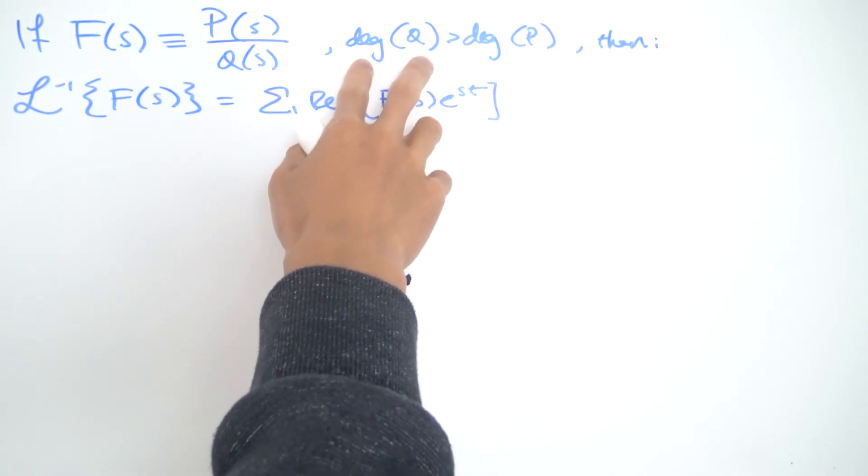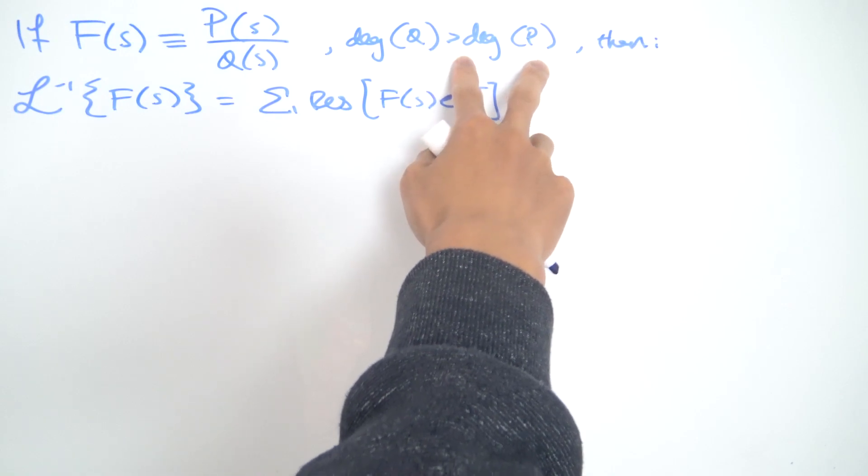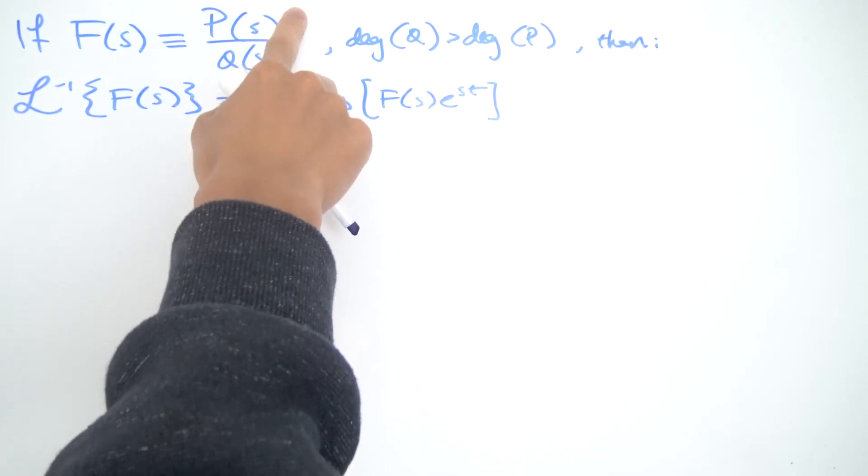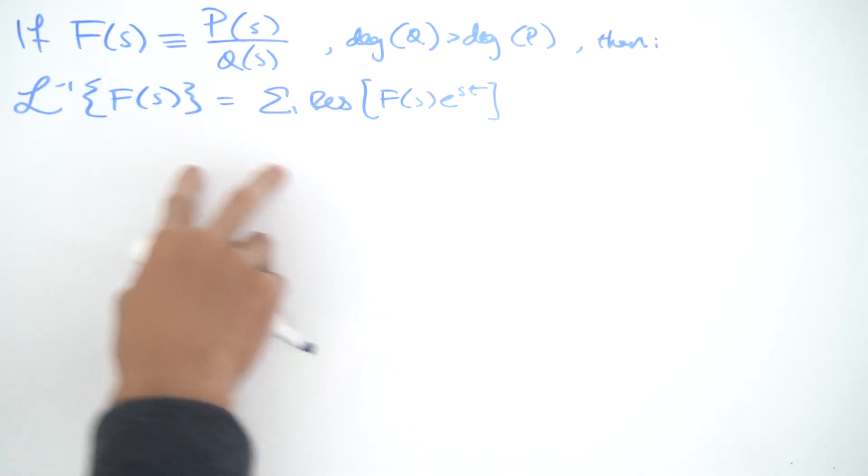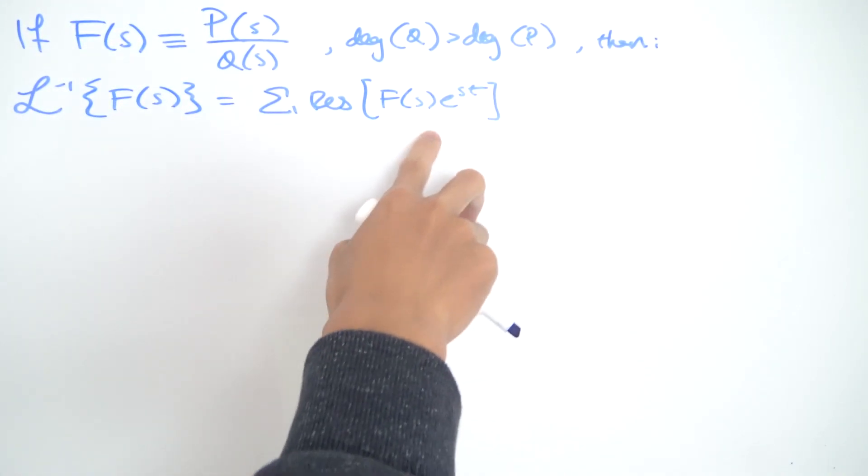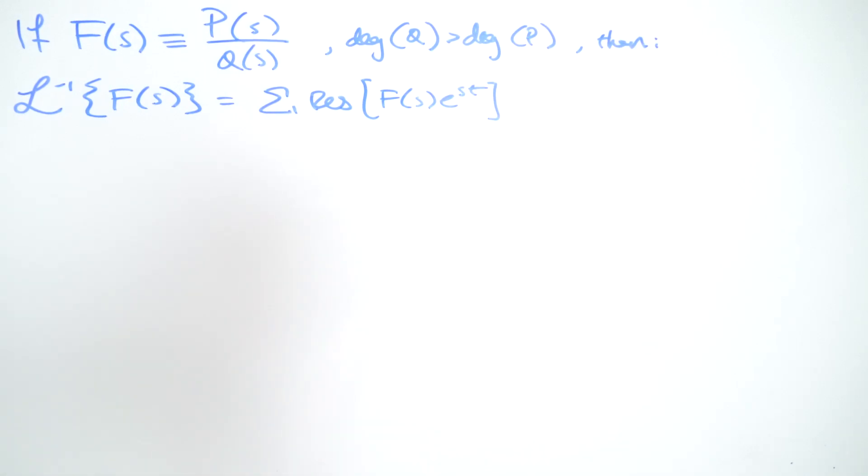if the degree of Q is greater than the degree of P, so if the degree of the denominator is bigger than the degree of the numerator, then the inverse Laplace transform of this function is just equal to the sum of all the residues of that function times e to the st.